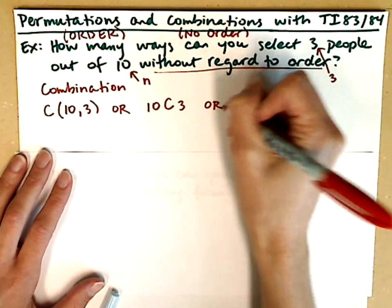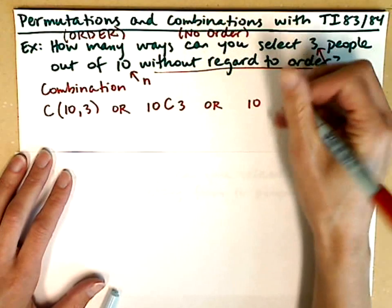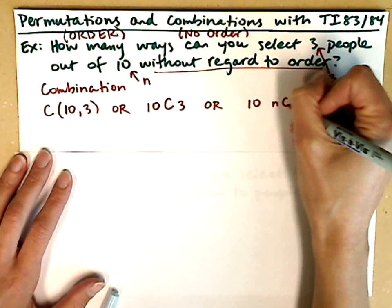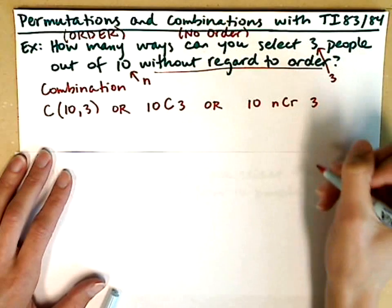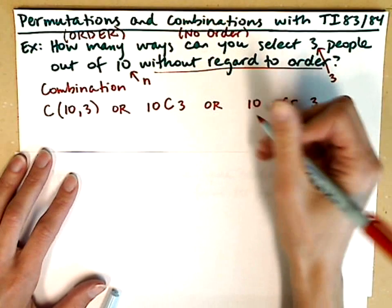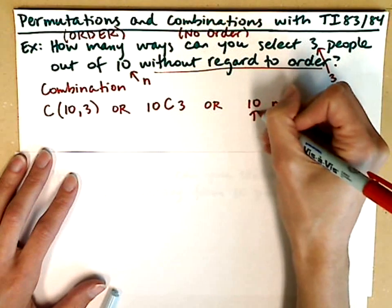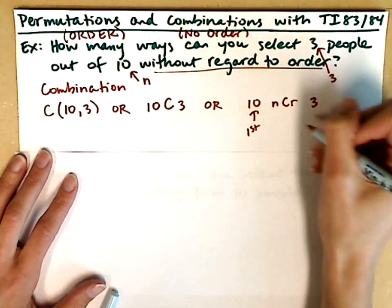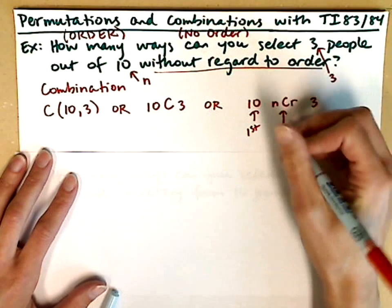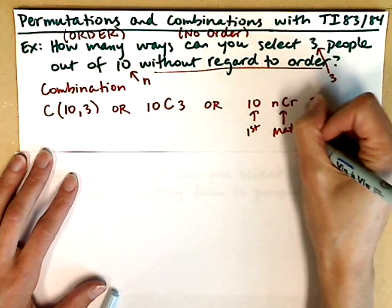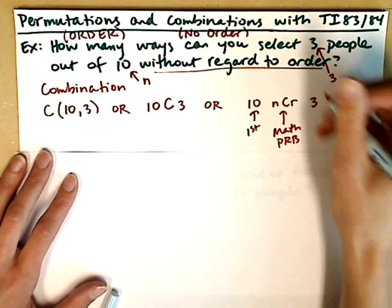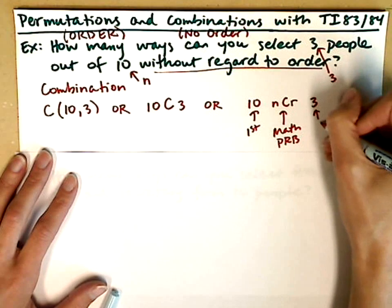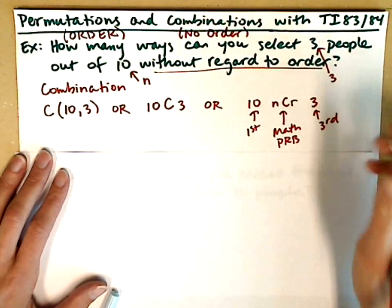In the calculator, this looks like 10 nCr 3. To get this typed in, we go to the home screen and start by typing 10. To get the nCr symbol, we go to the math menu, the probability submenu. Then we're back in the home screen and type the number 3.